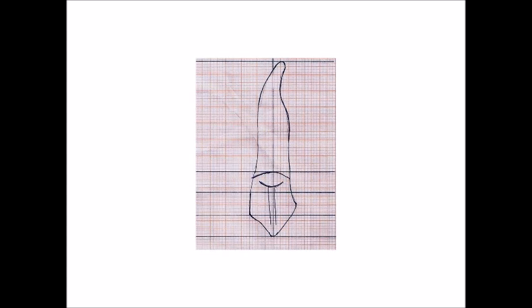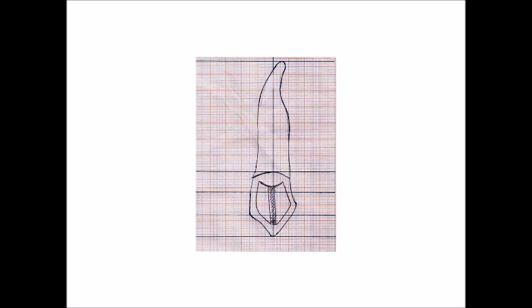From the center of the cingulum, there is a lingual ridge extending toward the incisal edge. There are also two marginal ridges — mesial marginal ridge and distal marginal ridge — and the cusp slope ridges. The area in the center is called the lingual fossa, but because there is a lingual ridge, the fossa is divided into two parts: the distolingual fossa and the mesiolingual fossa.